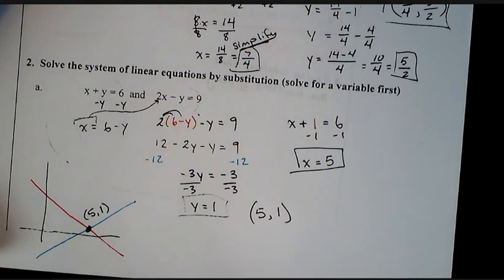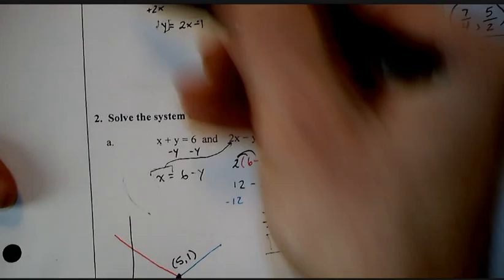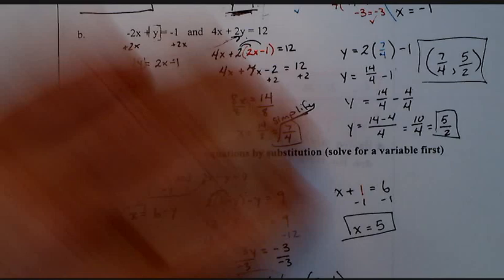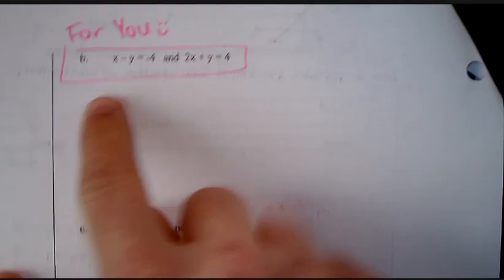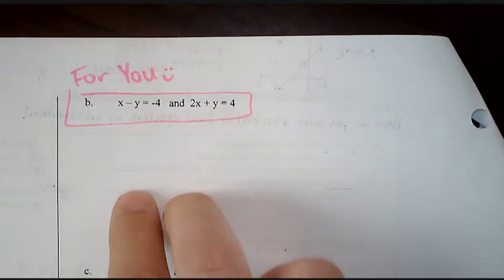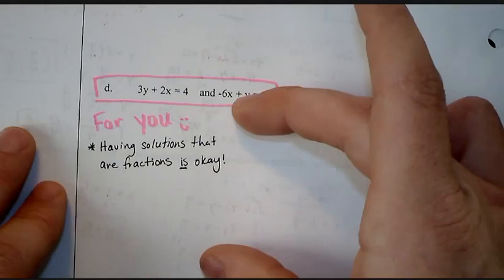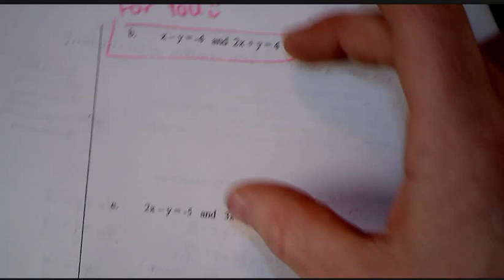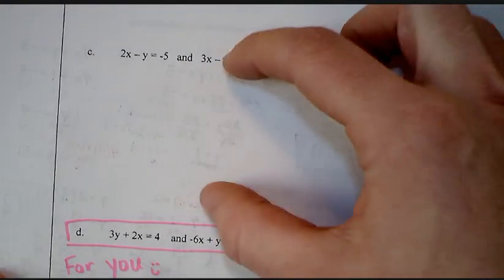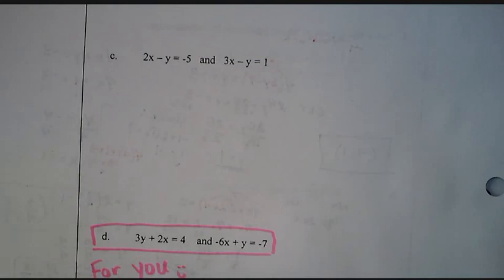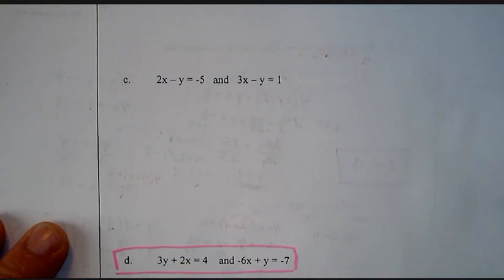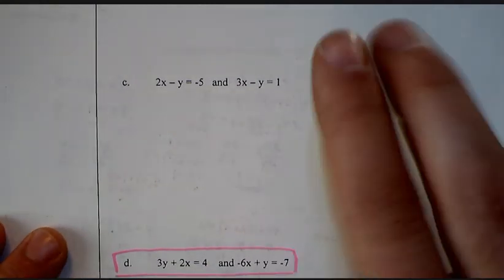Remember, if you have any questions on this, write it in the margin. Next page. I am going to leave letter B all for you. Give it a shot. Try your best. Also, try your best for letter D. Letter D is all for you. Letter B is all for you. Our last example that we're going to do together is letter C. So, starting off, what's our first step? Solve for one variable. Quote, unquote. Solve.